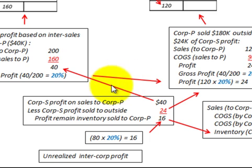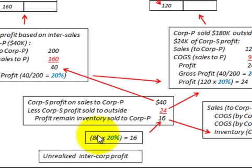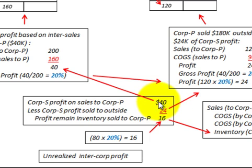To determine the profit sitting in ending inventory or unsold inventory: Corporation S has a total profit on sales to Corporation P of $40,000. We subtract Corporation S's profit on the inventory that was sold to outside parties — $24,000. The difference, $40,000 less $24,000, gives us a remaining profit in ending inventory of $16,000. We could also calculate this by taking the ending inventory of $80,000 times the 20% gross profit ratio, which also gives $16,000. This $16,000 is the unrealized intercompany profit — the unrealized portion of the total profit that the subsidiary recorded on sales to the parent.